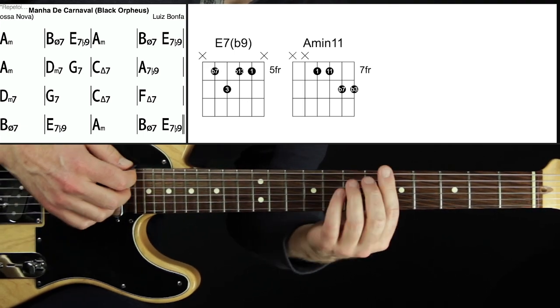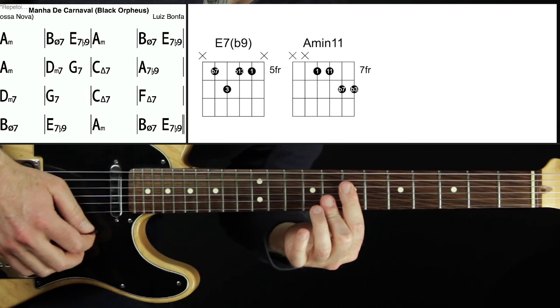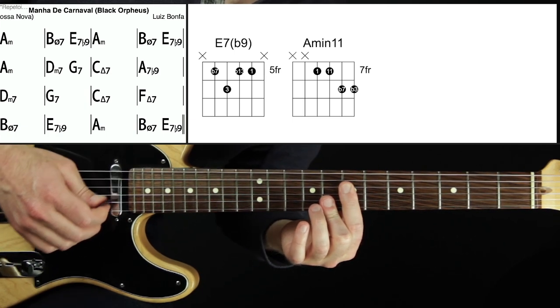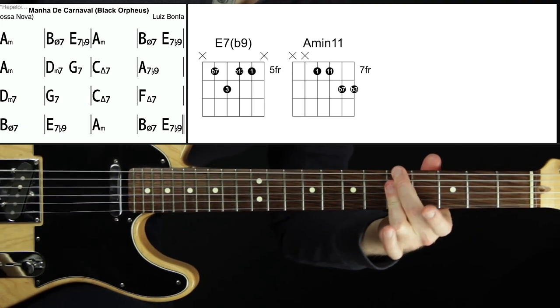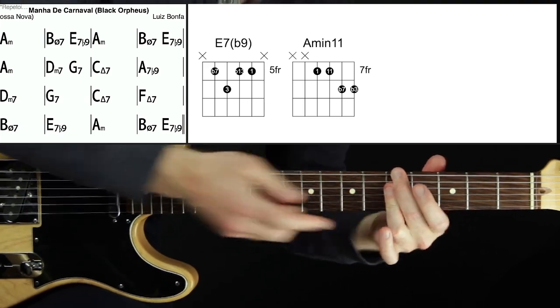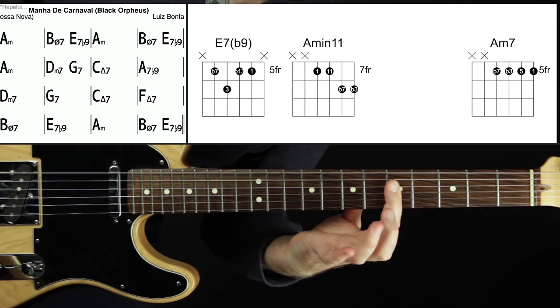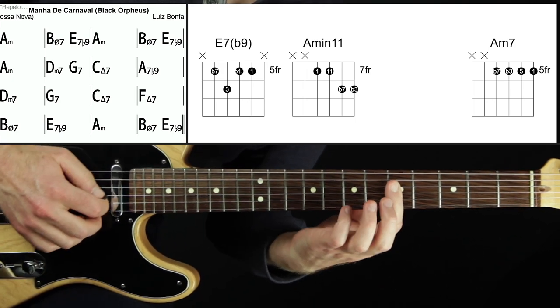So flat three two one of A minor. Okay great we got that one. Well here is a shape. It's very common for A minor 7. If we take this and put it on the top we get this. It's an inversion, third inversion of A minor 7.